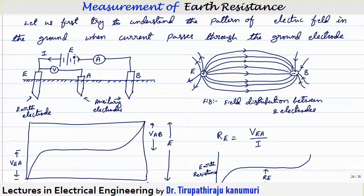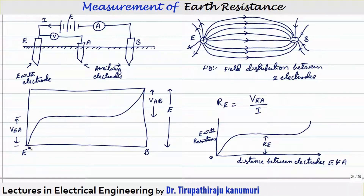Similarly, while reaching near electrode B, the electric field will diverge again. If you take the distribution of potential, it will vary drastically from the electrode, reach some constant value after some distance, remain constant, then change drastically again near the second electrode. The electrode is assumed to have a potential E. The potential gradient changes drastically from this electrode, reaches a constant value, is maintained constant, and then drastically changes again near the second electrode.